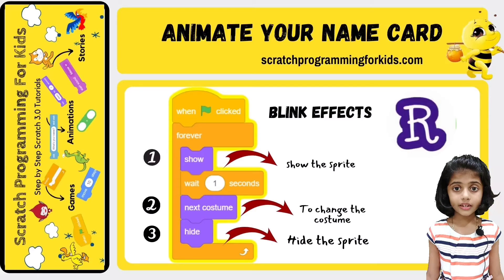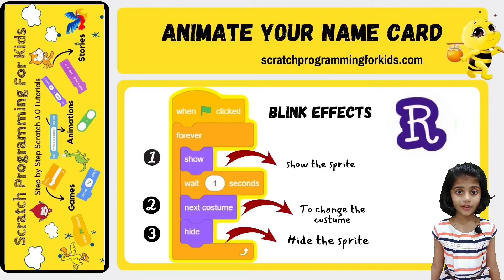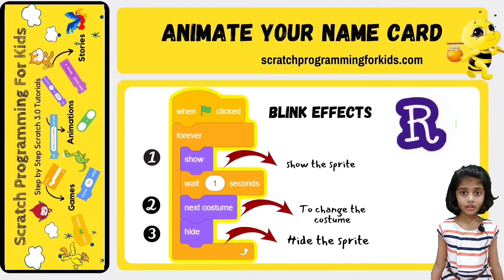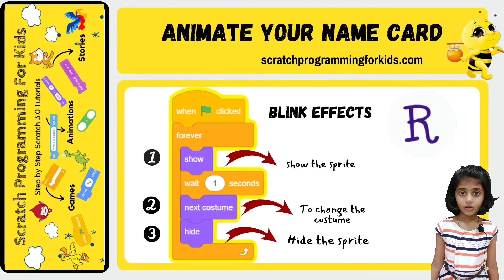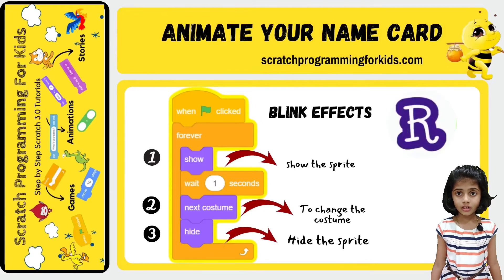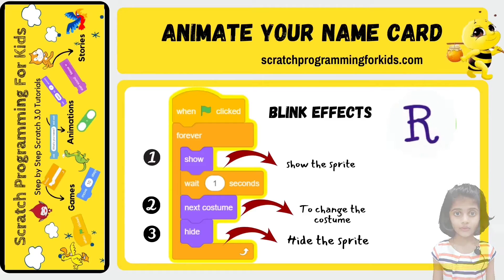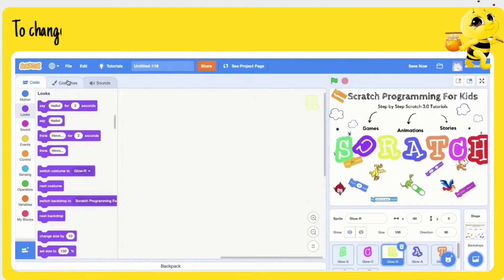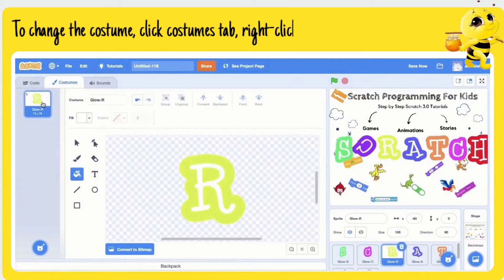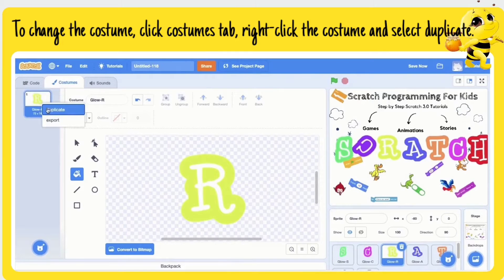By hiding and showing a sprite and switching between costumes, we can create a blink effect. To change the costume, click the Costumes tab, right-click the costume and select Duplicate.